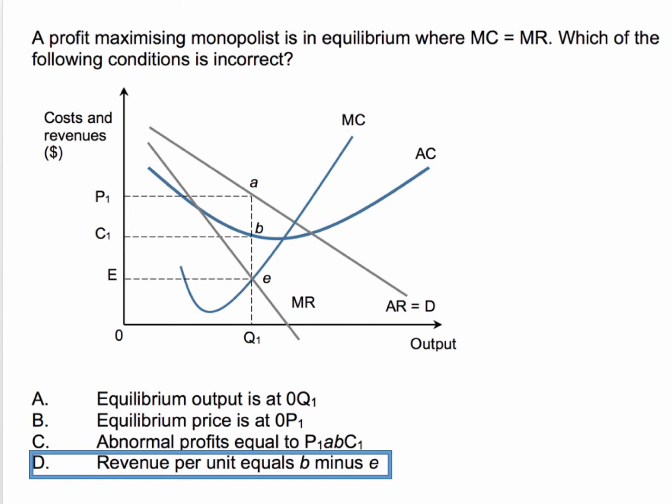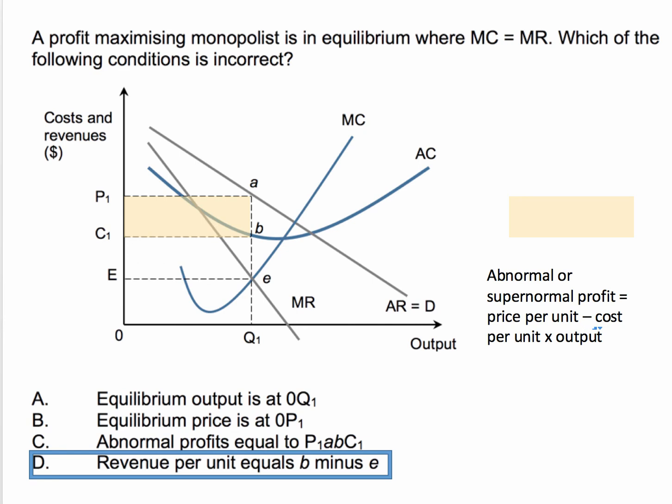Is the abnormal profit equal to P1ABC1? Yes, the abnormal profit is the price per unit, which is P1, minus the cost per unit — we use the average cost curve to show that. Indeed, that is the abnormal profit, also known as supernormal profit.